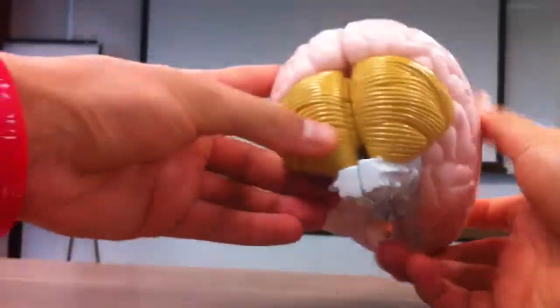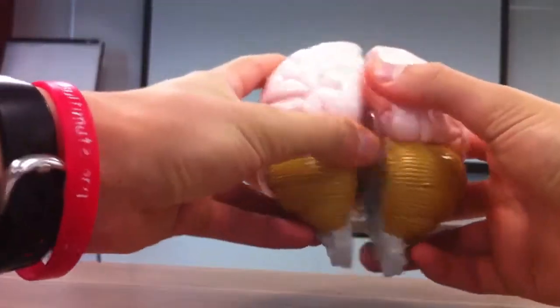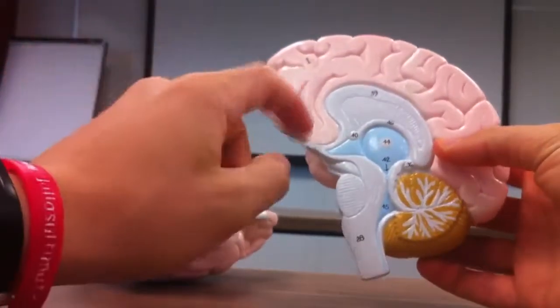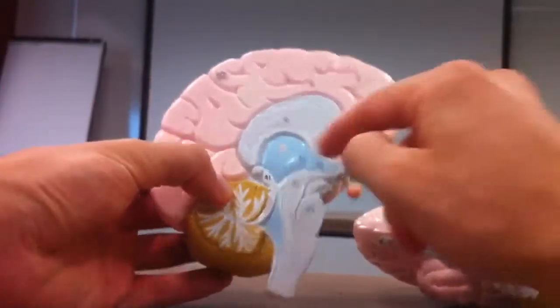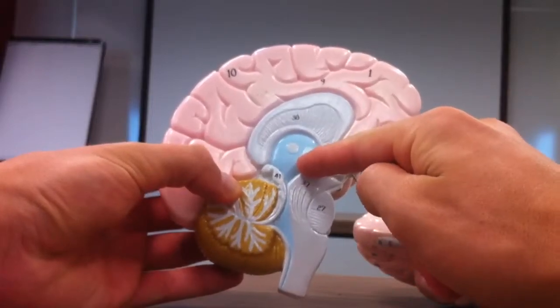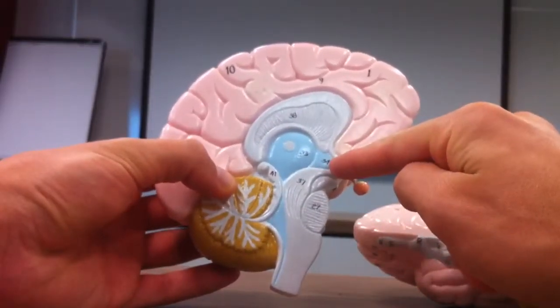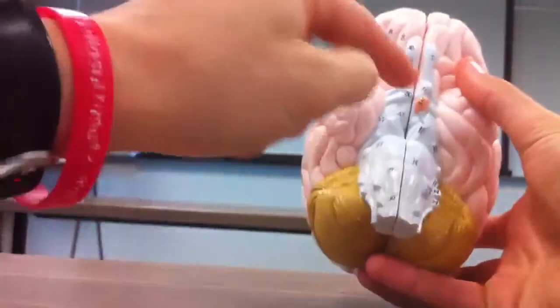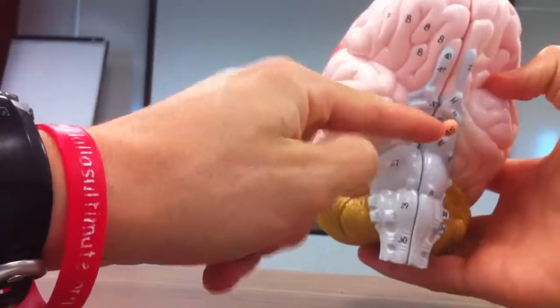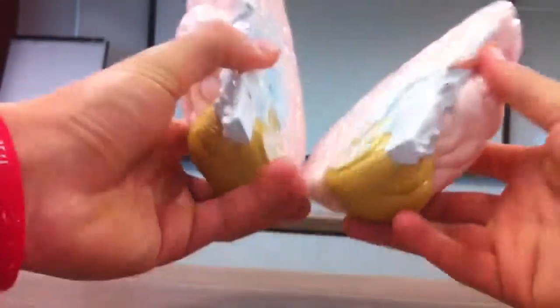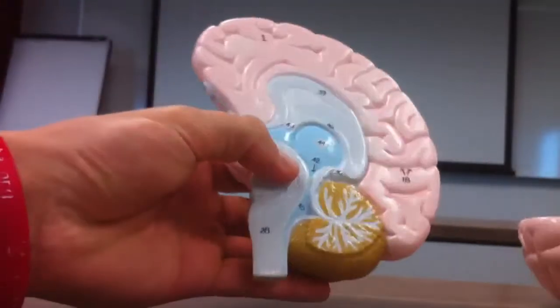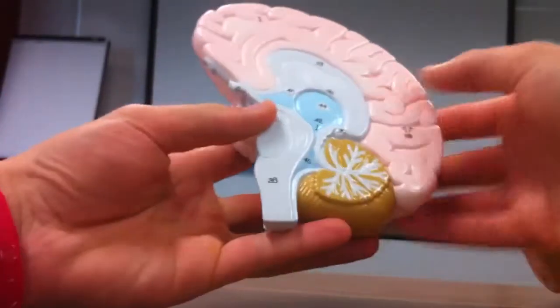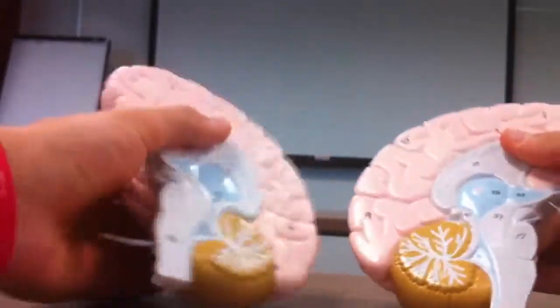Now the midbrain. 33 is a thalamus. 34 is a hypothalamus. 35 is the pituitary gland. 36 is the pineal body. 37 is the midbrain.